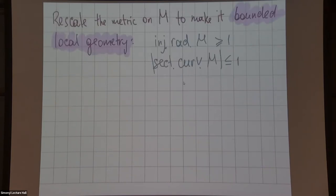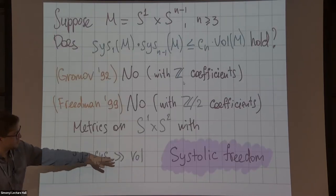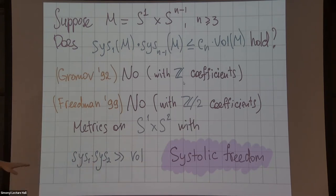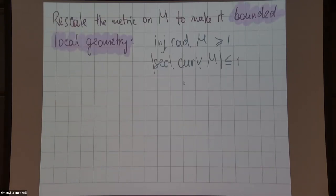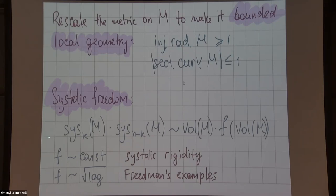One way to measure the extent of the systolic freedom is as follows. This kind of inequality is not homogeneous, so when you scale your manifold the different sides grow at different rates. One way to measure the extent of the systolic freedom is to scale your manifold first if needed to make it balanced, to make the injectivity radius bigger than one and make the sectional curvature less than one. Then we can measure this systolic product in terms of some function of the volume which is bigger than the volume, multiply volume by some monotone increasing function of the volume.